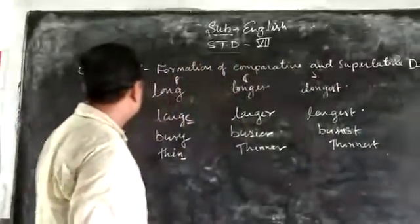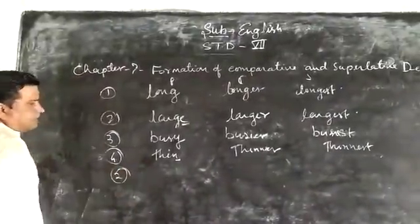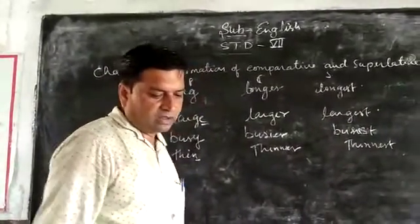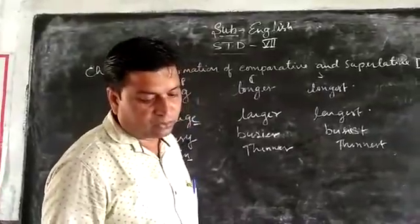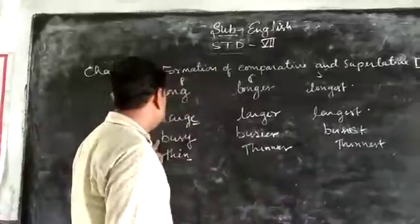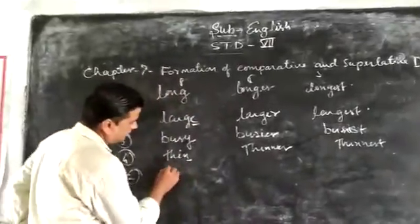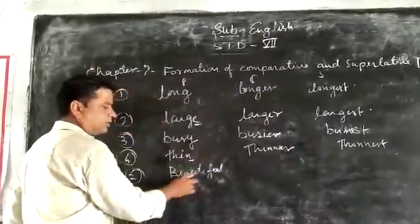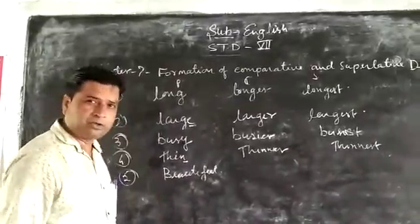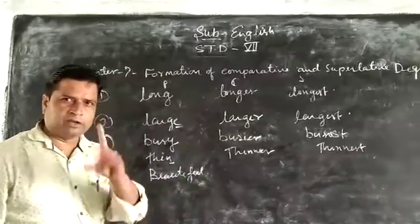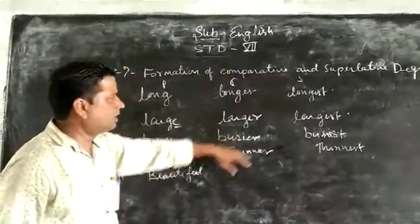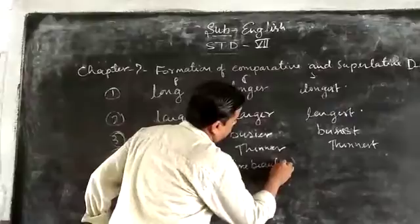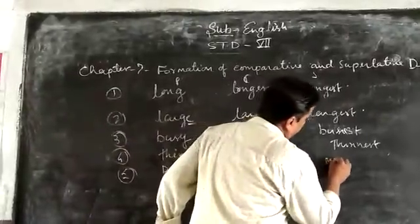Words that have more than one syllable are called polysyllabic words. For example, the word 'beautiful' is polysyllabic. In this type of adjective, we do not use ER and EST. Instead, we write 'more' for comparative — 'more beautiful' — and 'most' for superlative — 'most beautiful'.